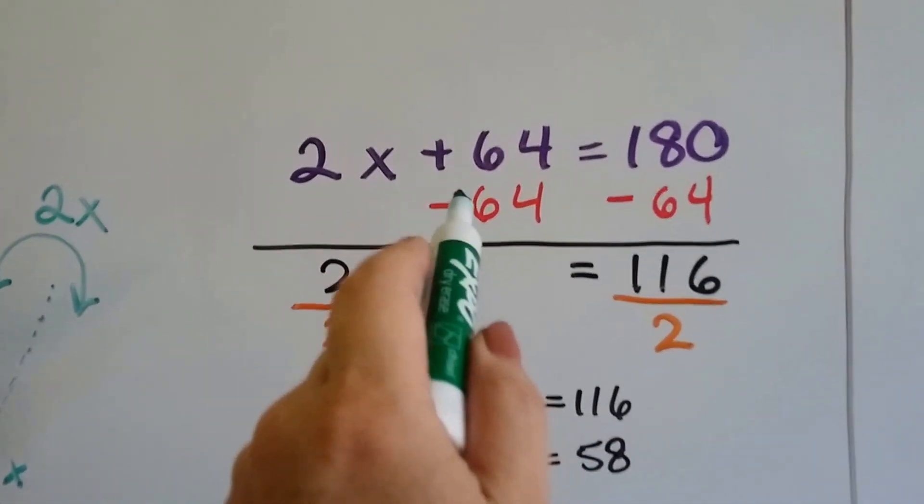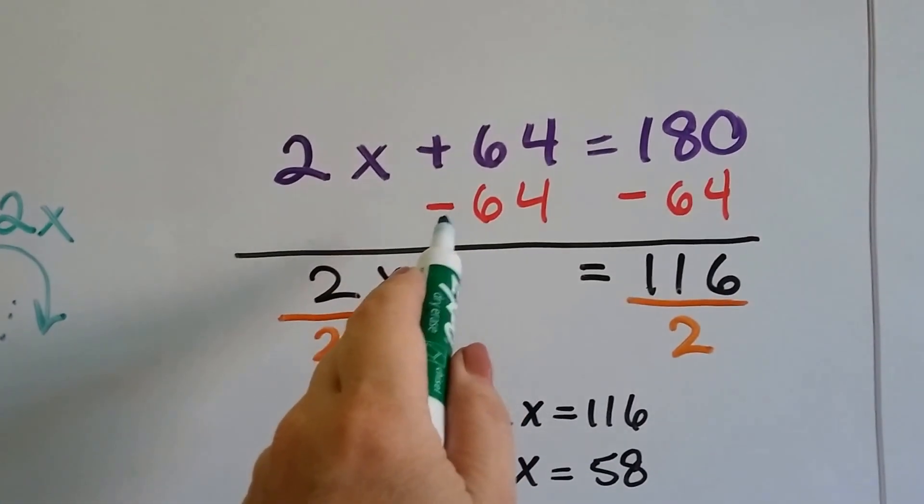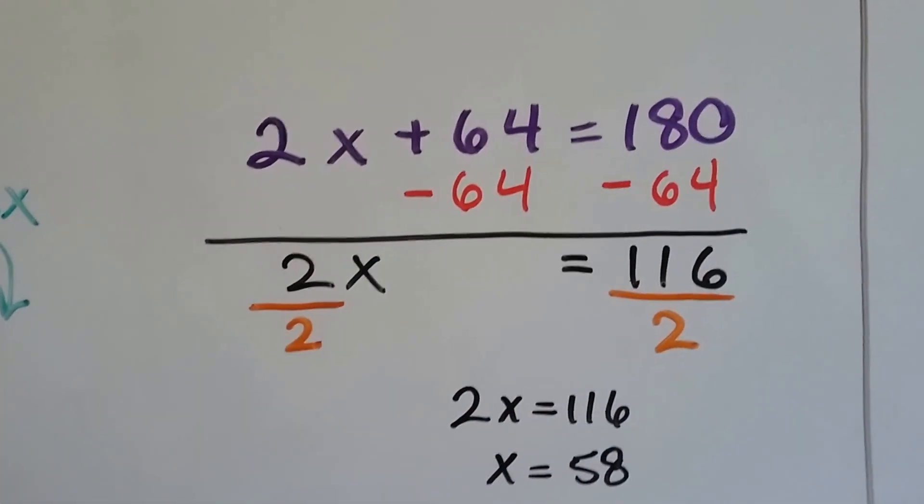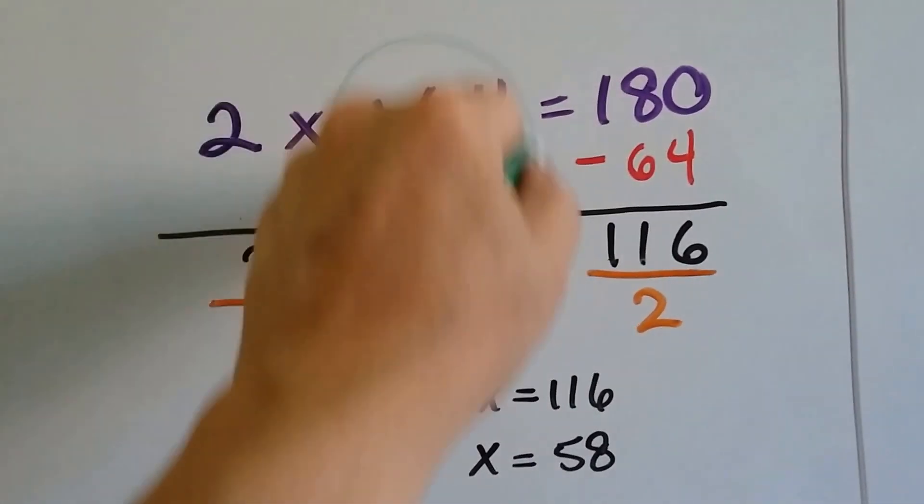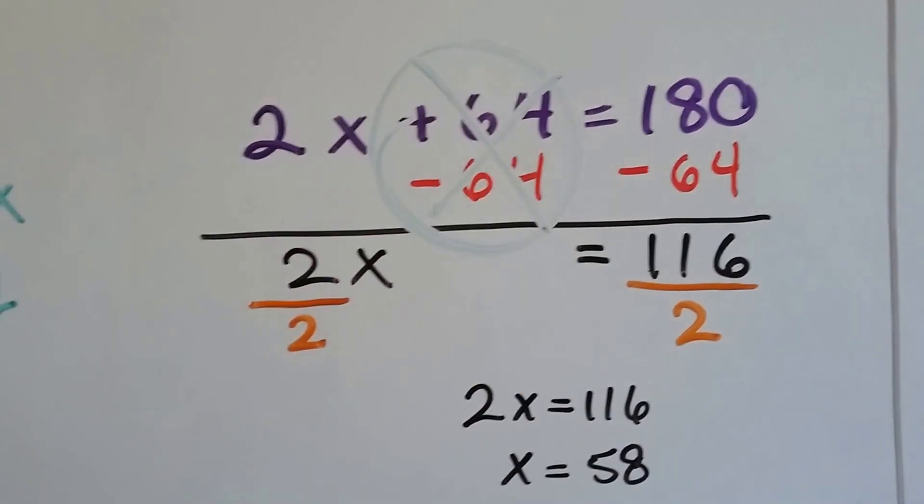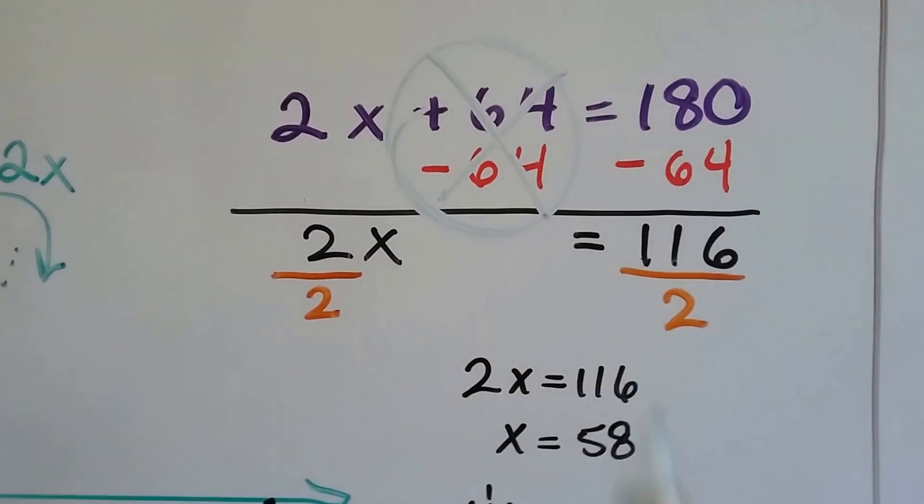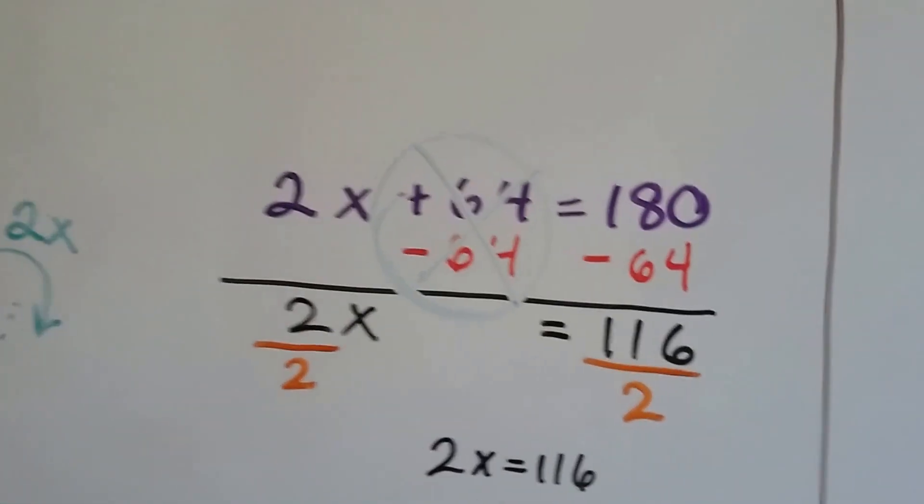And we do the inverse of addition, which is subtraction. We take away 64 from each side. That's going to create a zero pair here and eliminate that 64. We're going to end up with 2X equals 116 degrees.